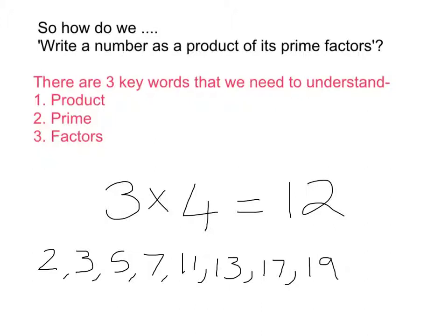Putting this all together then, writing a number as a product of its prime factors just means writing the list of prime numbers that we multiply together to get that number. That sounds quite complicated at the moment, but hopefully by the end of this video it will make sense. So basically it's multiplying together prime numbers to get our number.